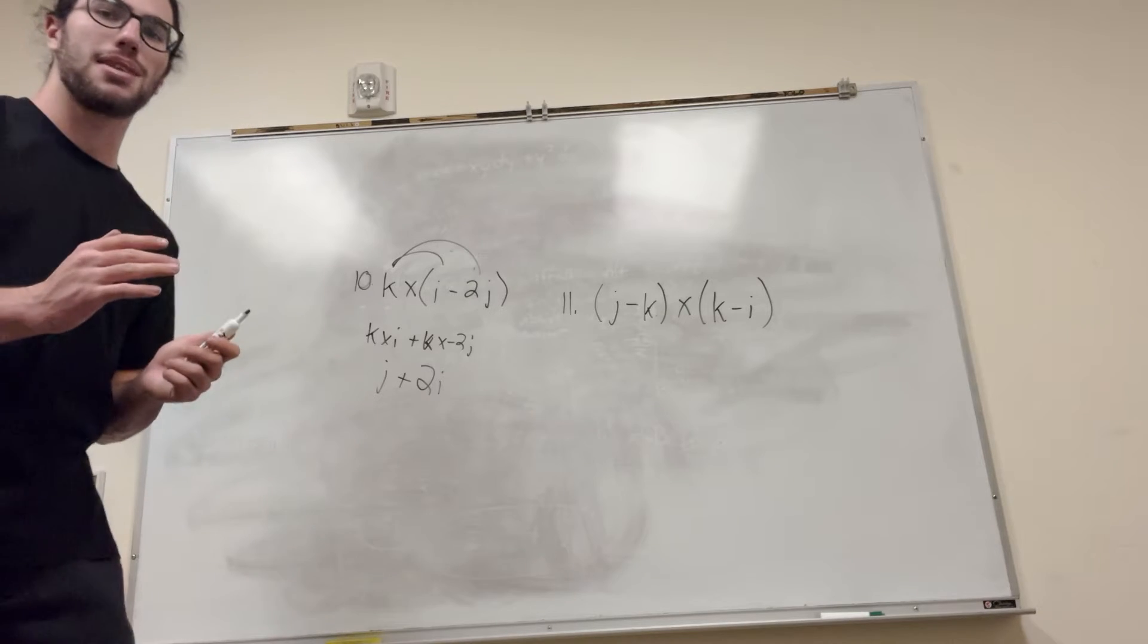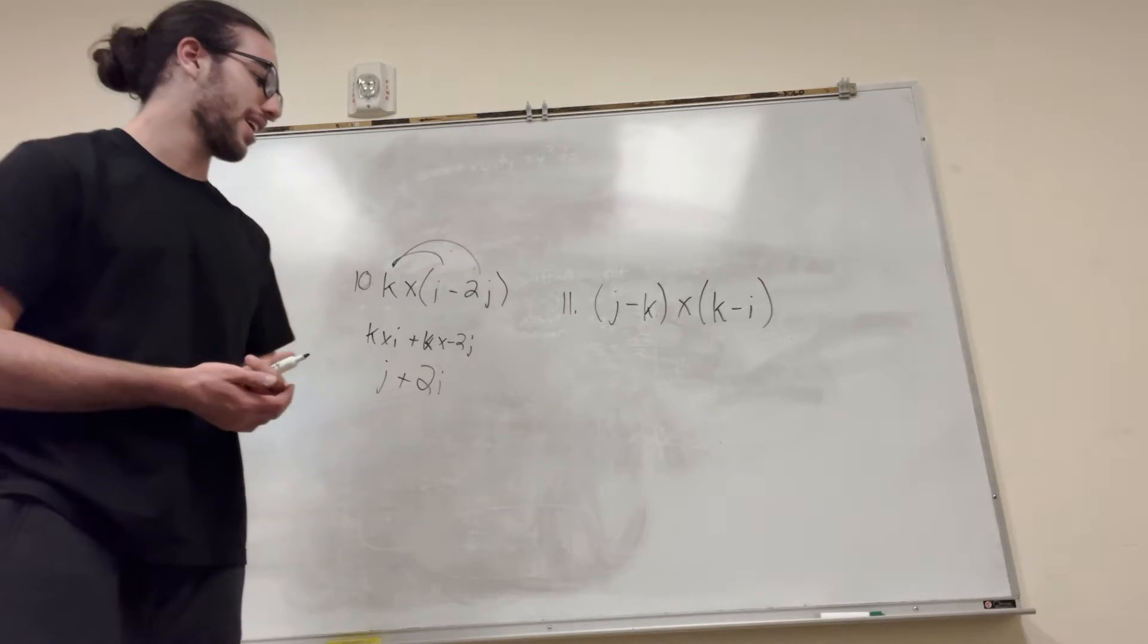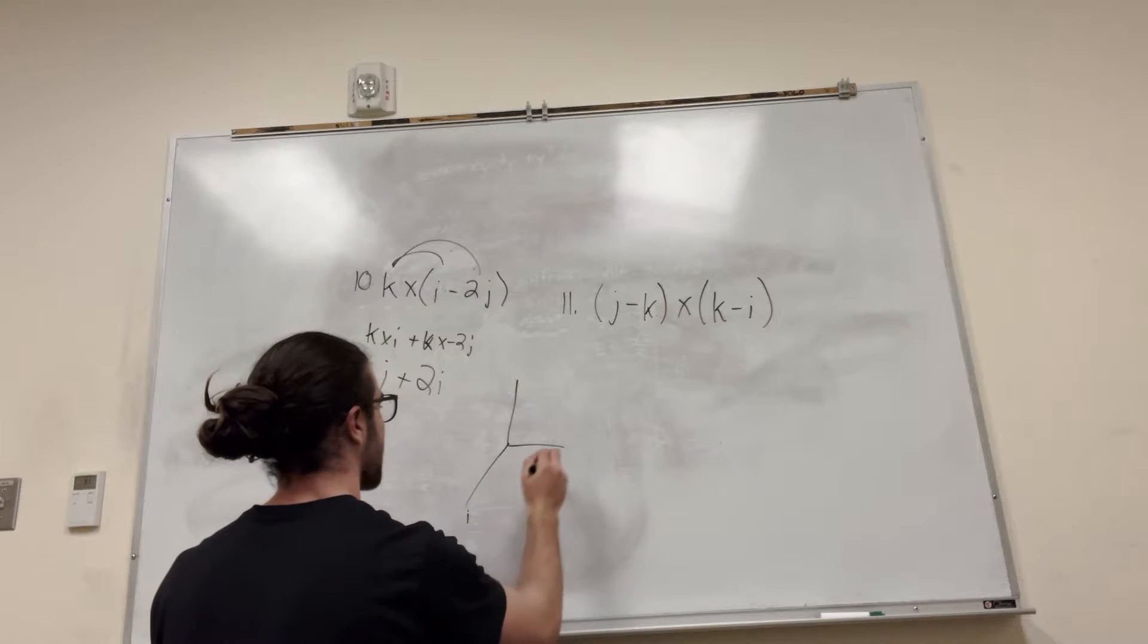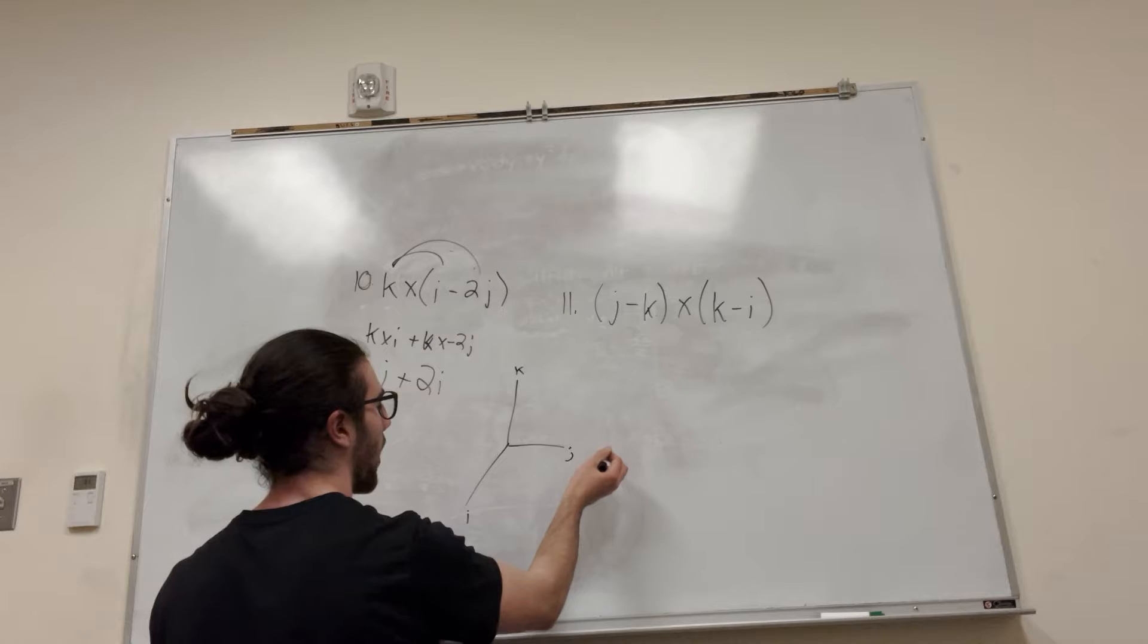So practice the right-hand rule. You might want to watch a better video than me because I don't think I explained it very well. I'll try to do it really quick, actually. So this is i, this is j, this is k, right? This is the x, y, z.